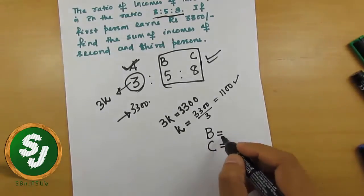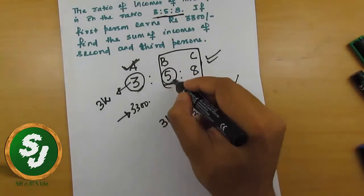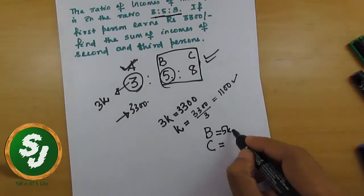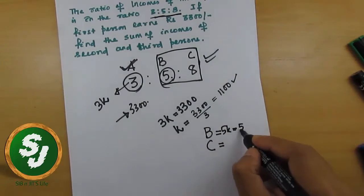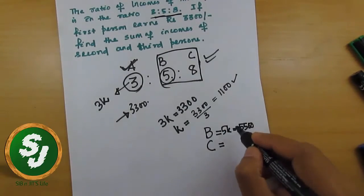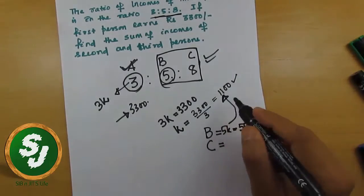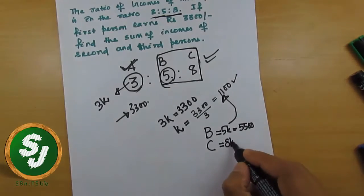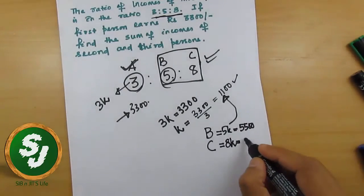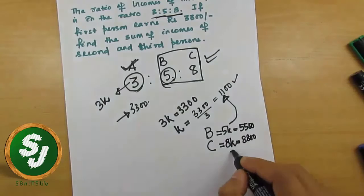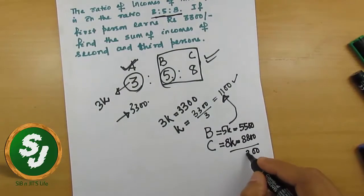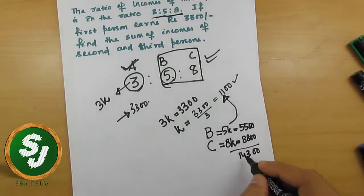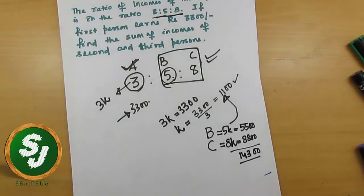So what do they do? The income of B which is 5K - so 5K means 5 into 1100, which is 5500. C is 8K, 8K means 8800. So they add it up: 5500 plus 8800 equals 14300, which is the sum of incomes of B and C.